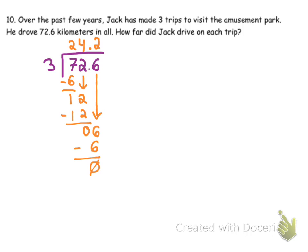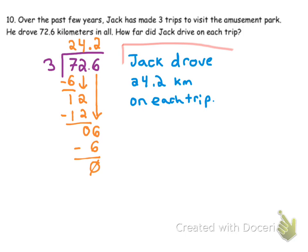So, then we need to write out our answer that Jack drove 24.2 kilometers on each trip. And that is it for question number 10. If you have any questions, make sure to email me. KM is just an abbreviation for kilometer. You can write out the word as well.